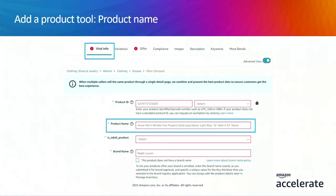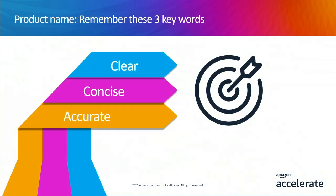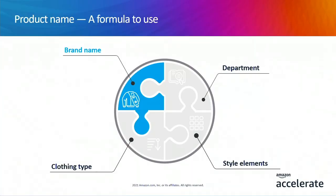Now let's talk about the next important field: the product name. The product name is a required field and the first element of the listing people will read. Remember three key words: clear, concise, and accurate. Your goal is to get customers to click on the product — you're only one click away from buy now. We find that product names that follow this philosophy perform best in apparel. The formula has four major components. You start with the brand name, which helps customers identify the brand quickly, as people often become loyal to the apparel brands that meet their fashion needs and fit them best.